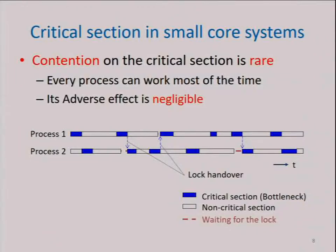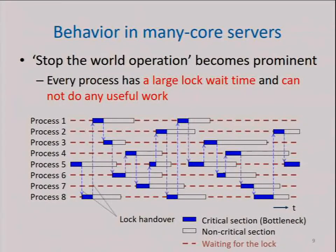On servers with a small number of cores, such contention is rare, so the impact is small because most CPU time is utilized for meaningful processing. On the other hand, on servers with a large number of cores, the impact of a critical section can be large, as shown in this figure, which illustrates an extreme case where most CPU time is wasted waiting for the bottleneck critical section. This dotted line shows the waiting time. In other words, meaningful processing does not progress in this situation — I call such behavior a stop-the-world operation.